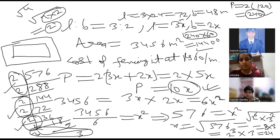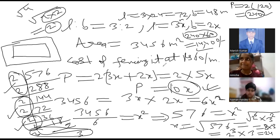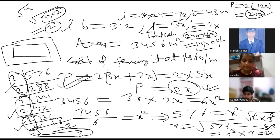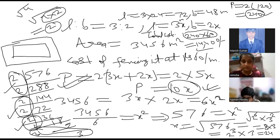So perimeter will be 2 into L plus B — 72 plus 48 is 120, two into 120 is 240. This is the perimeter. Now per meter the cost is rupees 60, so 240 into 60. 24 into 6 is 144, then two zeros — that is 14400. So whatever perimeter was started from earlier was not required. Whatever is given, the formula of that only will be applied first. Take a screenshot of this and okay, can we move further? Yes sir.